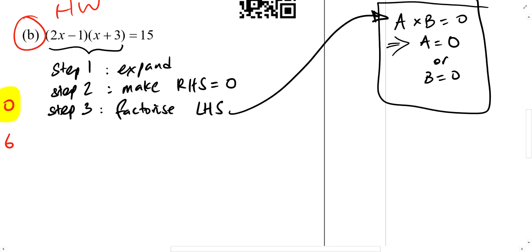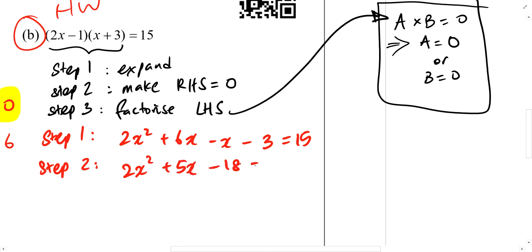Start with our step 1. Expand. So 2x square plus 6x minus x minus 3 equals to 15. Step 2. Make the right hand side equal to 0. Right now, my right hand side has a 15. So I need to subtract 15 on both sides so that it's equal to 0. I'm left with 2x square plus 5x minus 3 minus 15 is minus 18 equals to 0.